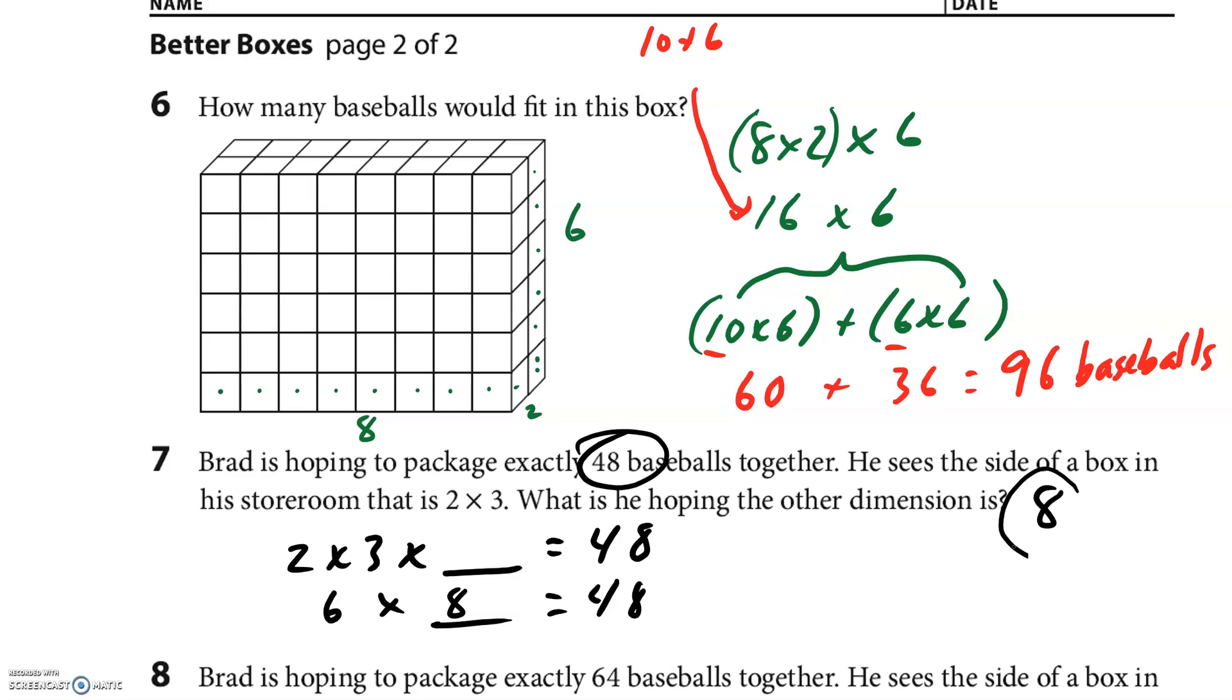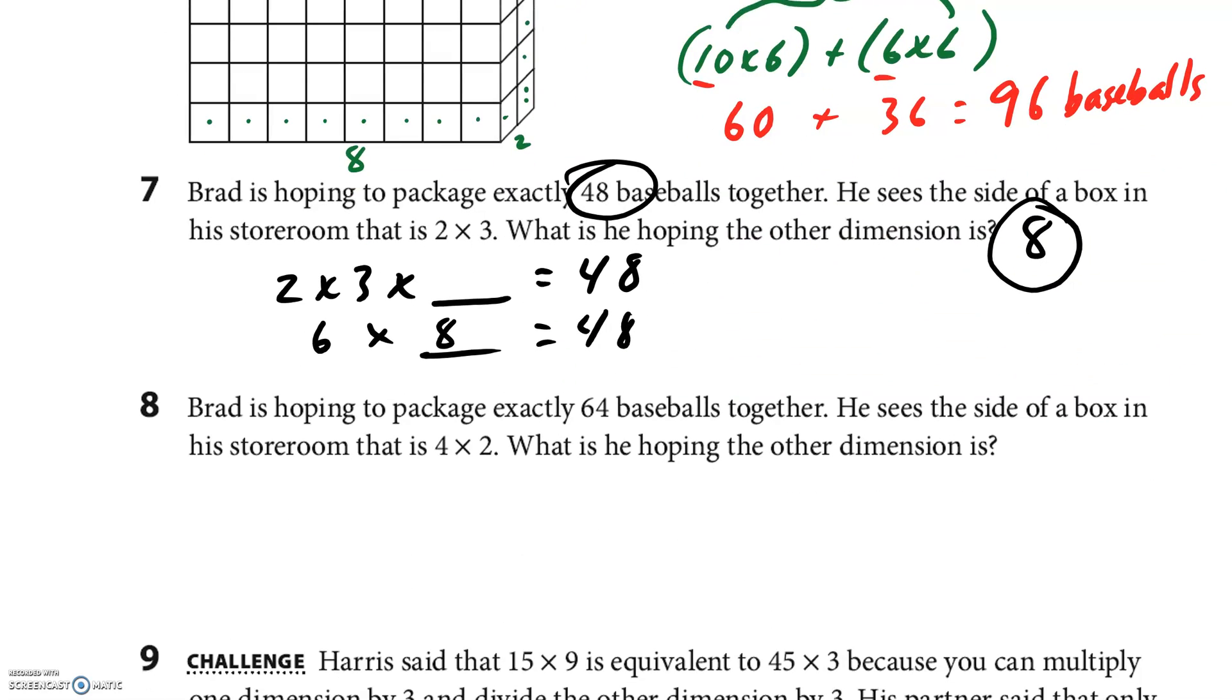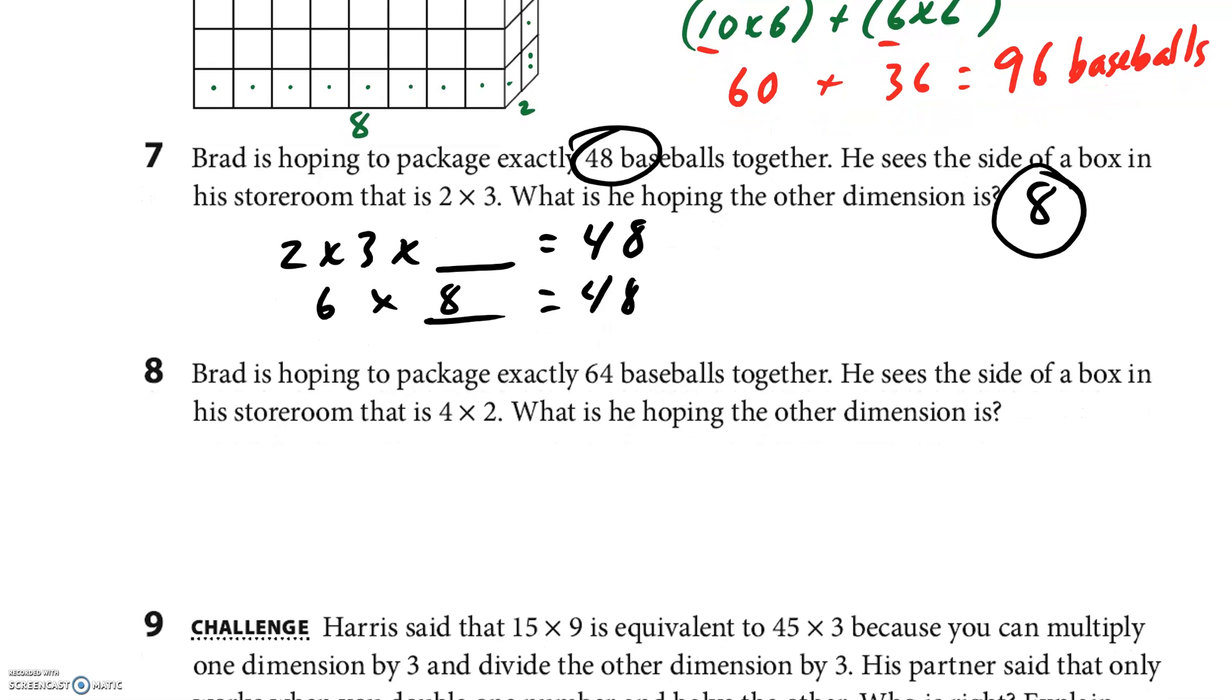Same concept, let's do the next one. Brad is hoping to package 64. The side of the box is 4 by 2, so 4 times 2 times something equals 64. I know this is 8. 8 times something equals 64. What times 8 equals 64? I believe my answer is 8. Another answer of 8.